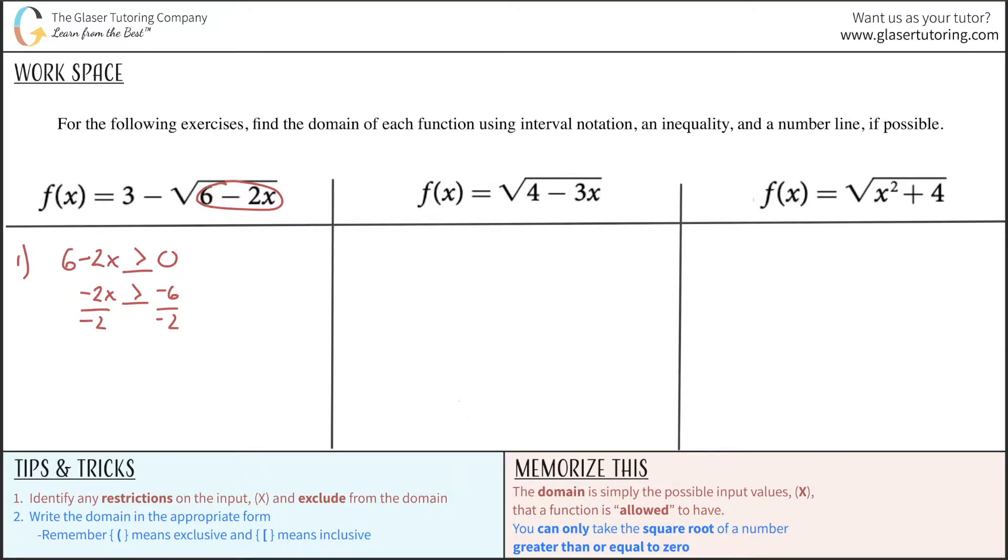Now here's the rule that generally gets forgotten. Whenever you divide an inequality by a negative value here, you have to flip the sign of the inequality. So if it was greater than, it would now become less than. If it was less than, then it would have become greater than. So now x will be less than or equal to positive 3. Because it was a negative divided by a negative. So this is now the restriction on your domain.